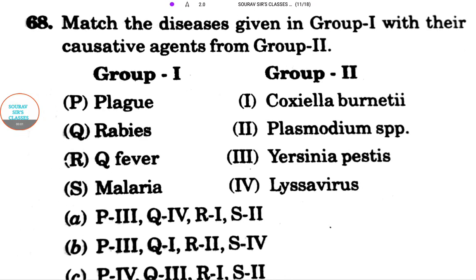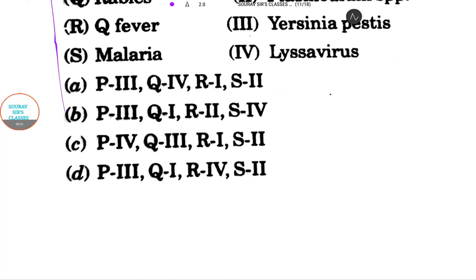Hello students, welcome to Shorthof Sir Classes. This question is about matching the diseases given in Group I with their causative agents from Group II. We have options in combination of each of them.